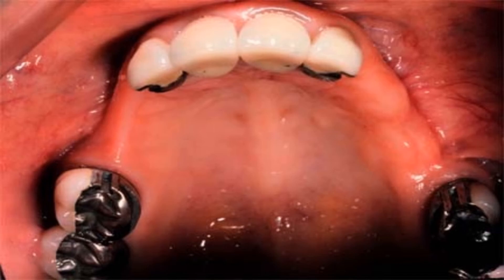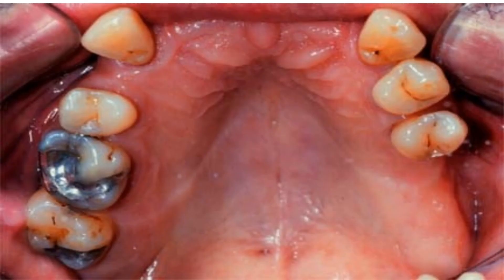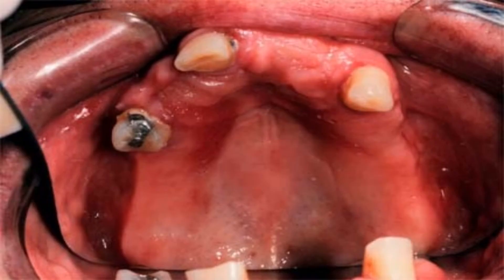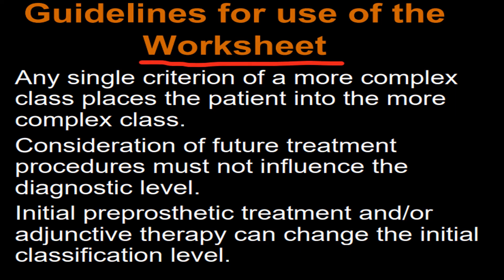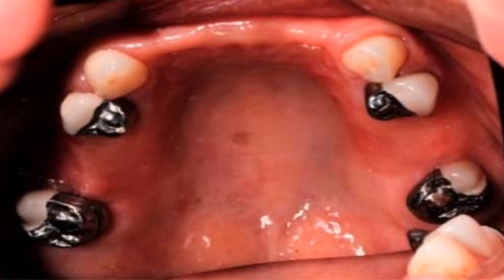Guidelines for use of the worksheet: any single criterion of a more complex class places the patient into the more complex class. Consideration of future treatment procedures must not influence the diagnostic level. Initial pre-prosthetic treatment and/or adjunctive therapy can change the initial classification level.